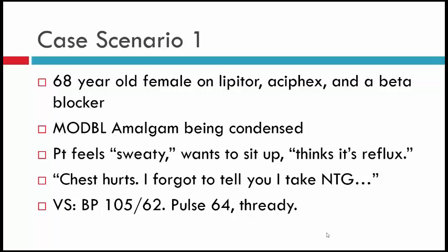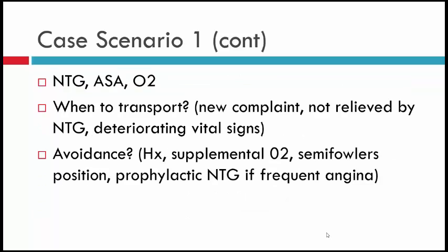Reverting to the ABCs: blood pressure is 105 over 62 — notably dropped from the start of the procedure. The pulse is weak and thready at 64. This looks like angina, so we'll consider nitroglycerin, aspirin, and oxygen. If this is a new complaint, not relieved by nitroglycerin, or if vital signs deteriorate, immediate transport is indicated. If the patient recognizes a familiar pattern and nitroglycerin provides relief, she may be discharged to home.